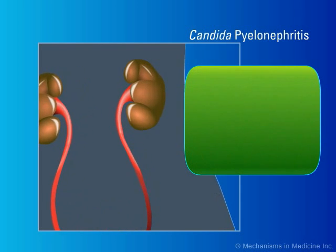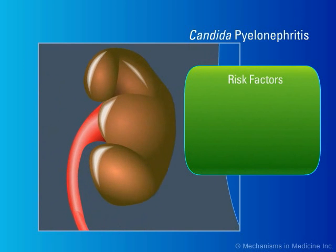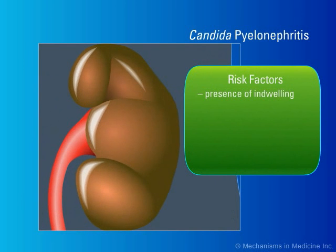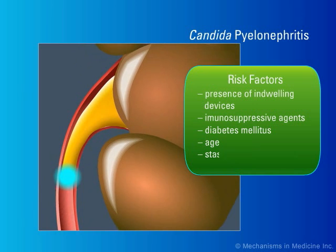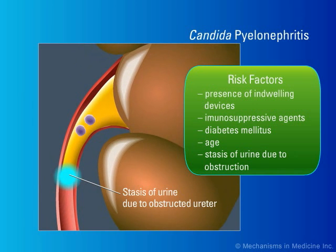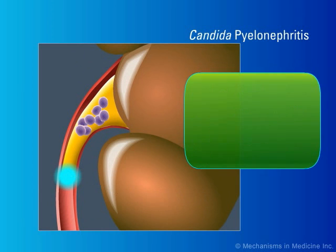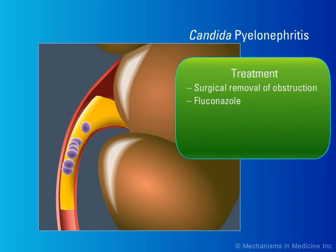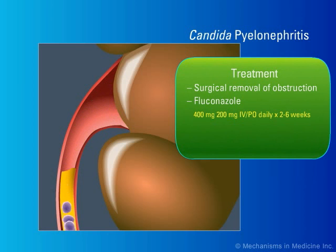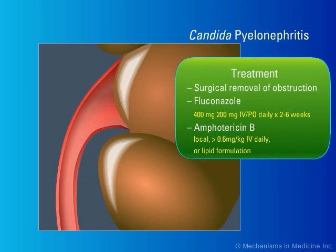Infection at this site has multiple risk factors, including the presence of stents or other indwelling devices, immunosuppressive agents, diabetes mellitus, age, and stasis of urine due to urinary tract obstruction, possibly from fungus balls. Treatment of candida pyelonephritis requires the surgical removal of the obstruction and medical intervention with fluconazole IV or orally, or amphotericin B locally or IV.